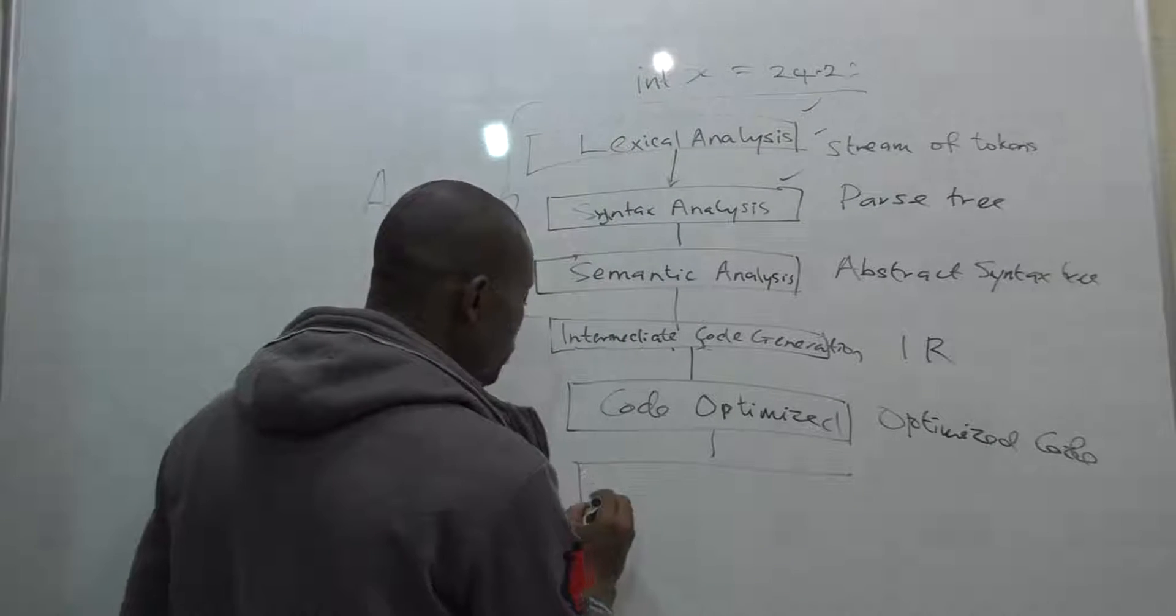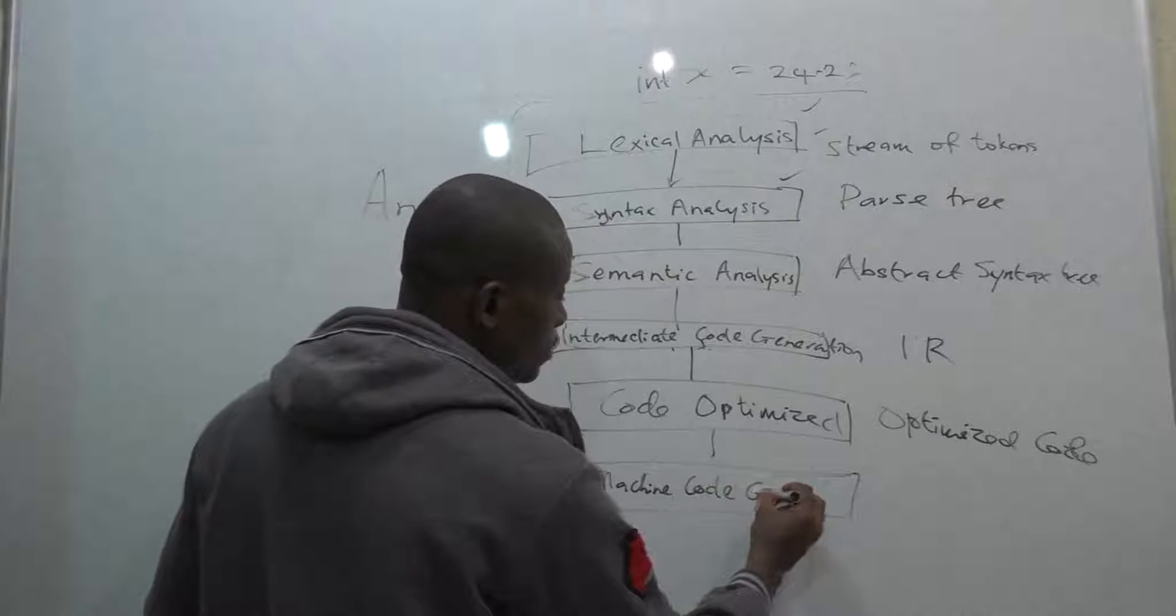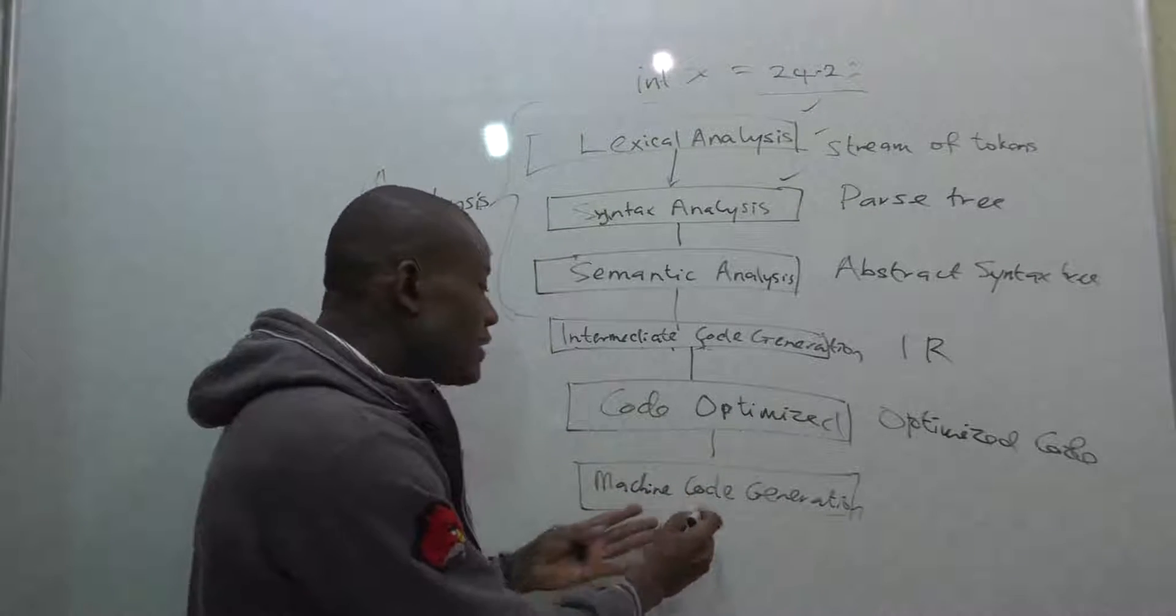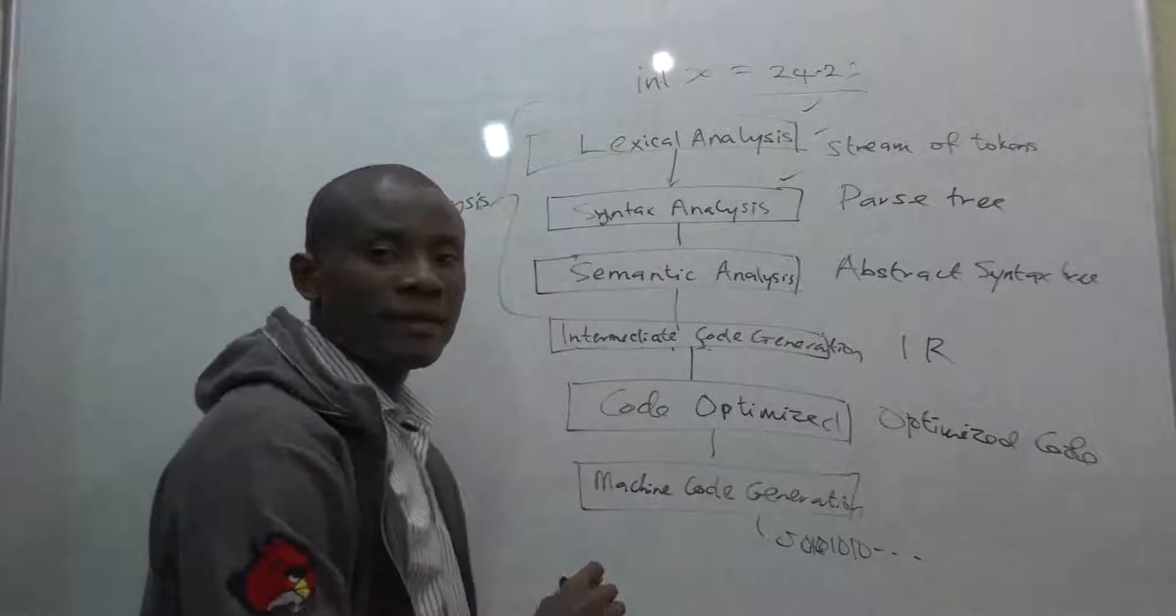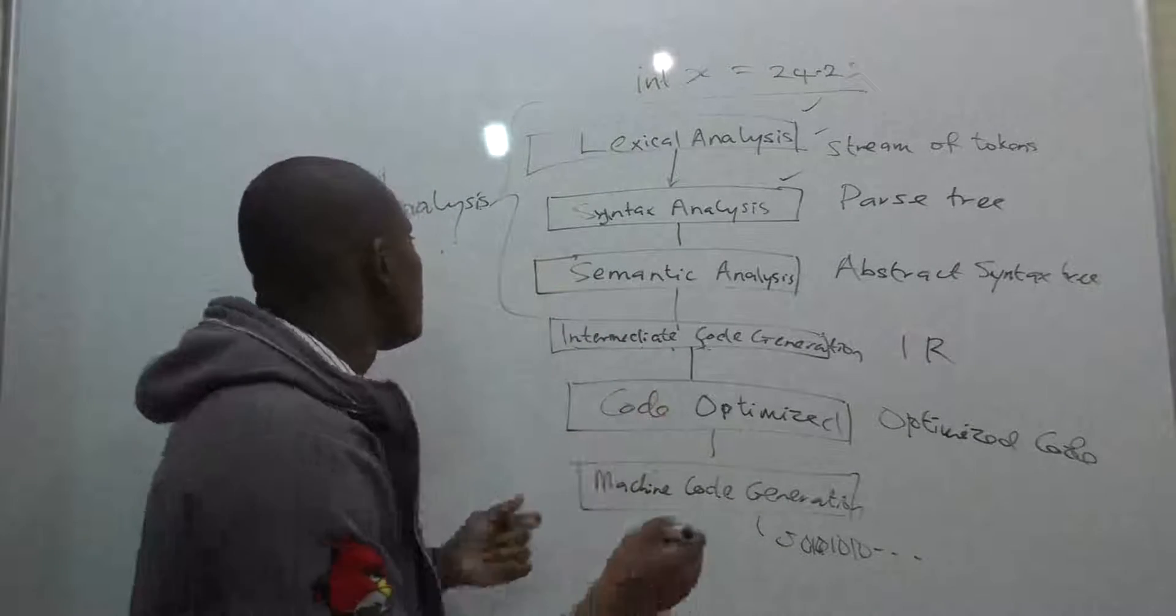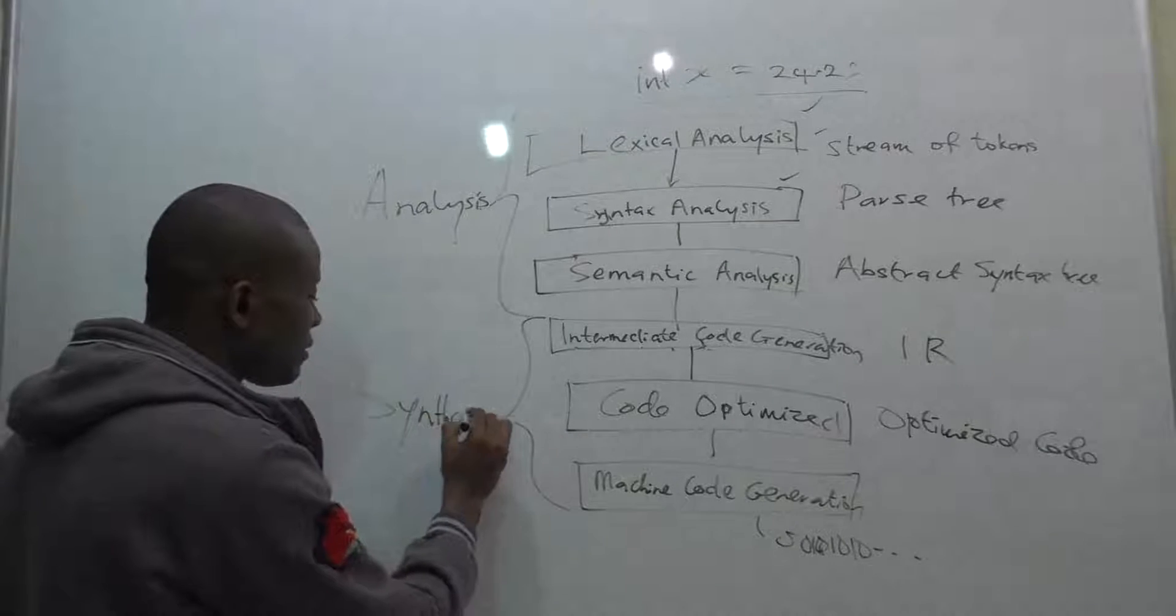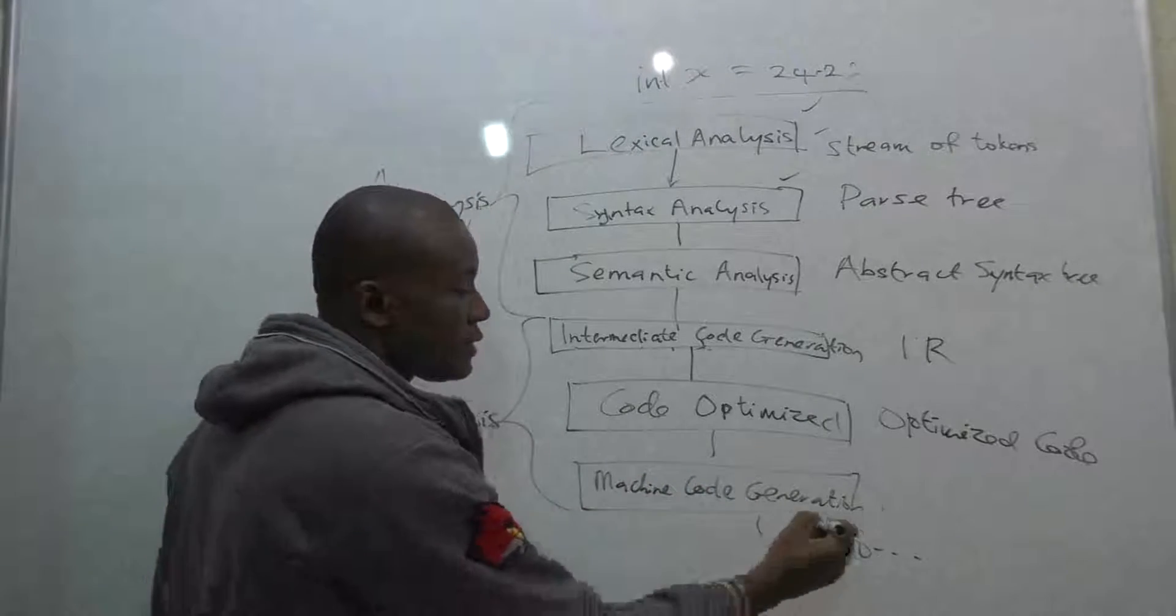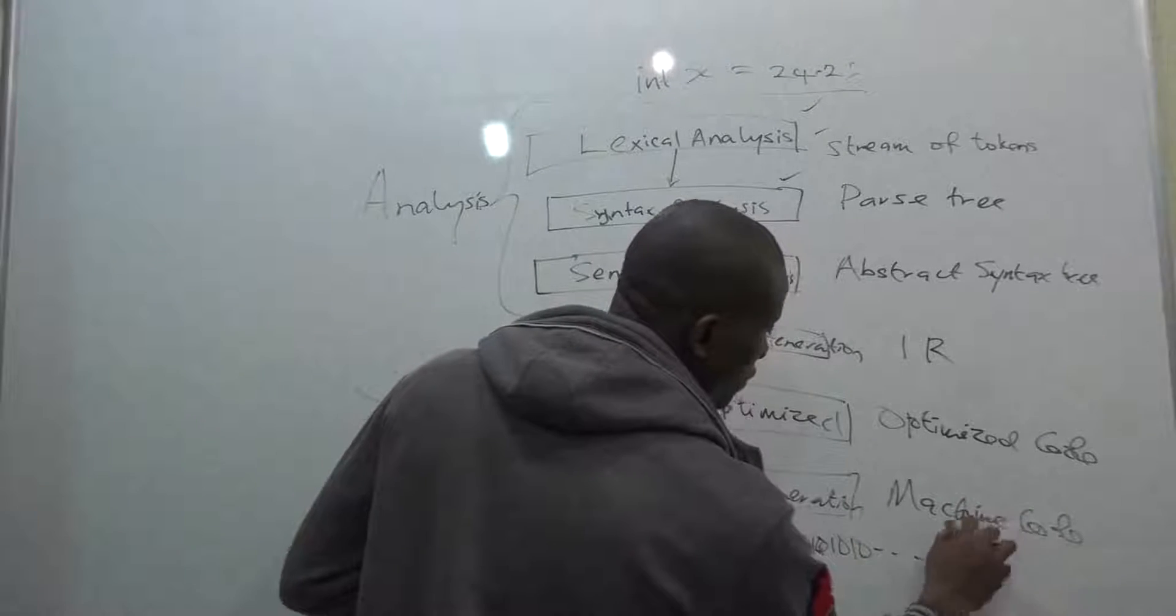The last one we are going to discuss now is the machine code generation. This is the last phase. It actually generates the strings of ones and zeros that will run on the machine. These are basically the six stages or six processes that take place in the compiler. The next three, these three, are called the synthesis. The output from here is the machine code.